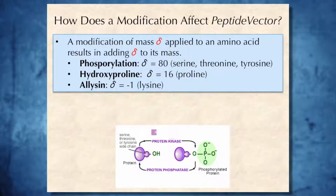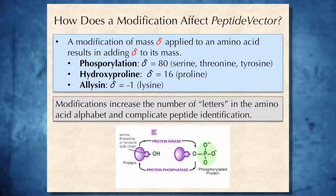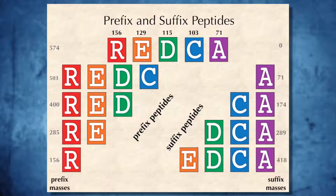For hydroxyproline in collagen, delta is equal to 16. And for a modification of lysine into allysine, it is equal to minus 1. Therefore, modifications essentially increase the number of letters in the amino acid alphabet and complicate peptide identification.